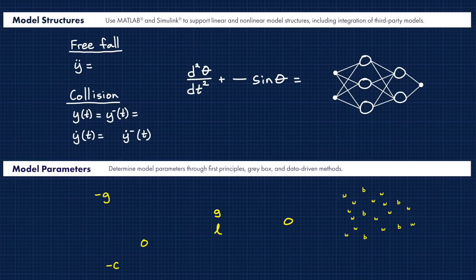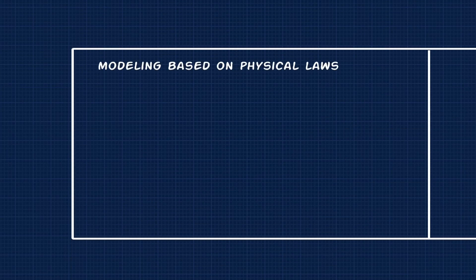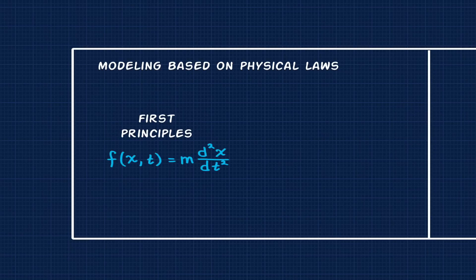This brings us to another thing we need to consider, and that is where do you get the knowledge about your system so that you know which structure to use, and you know how to get the parameters for that structure. If you understand the physical laws that govern your system, then you can derive the mathematical equations directly. This might mean using your knowledge of first principles and your knowledge of the system to write out a differential equation.